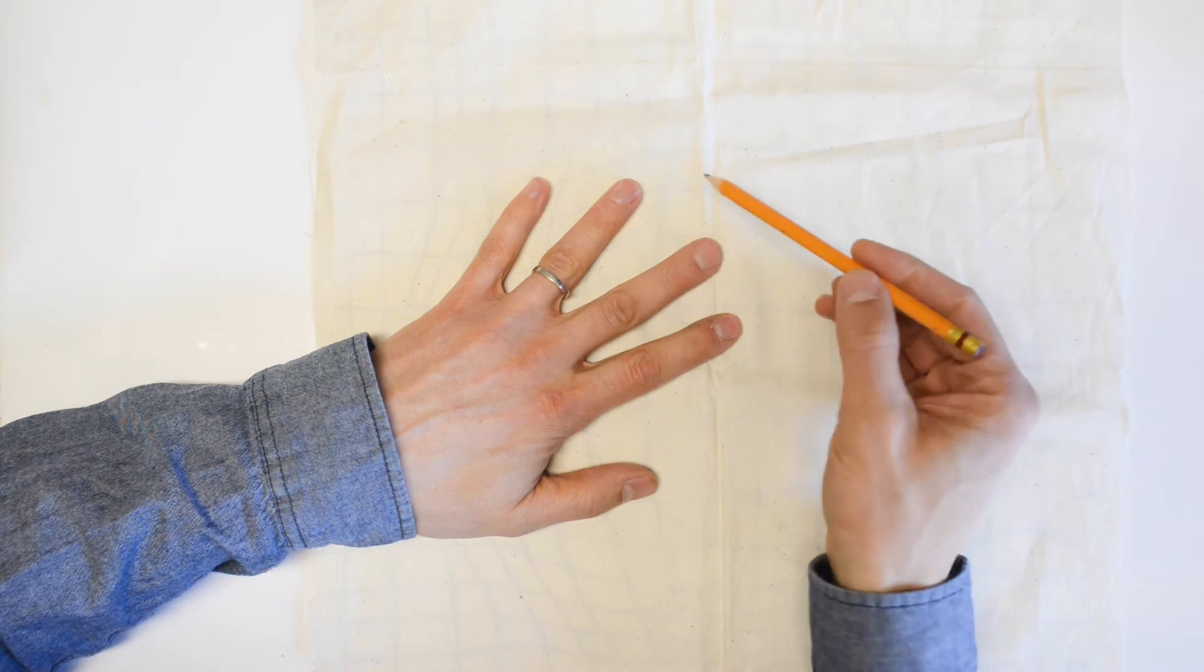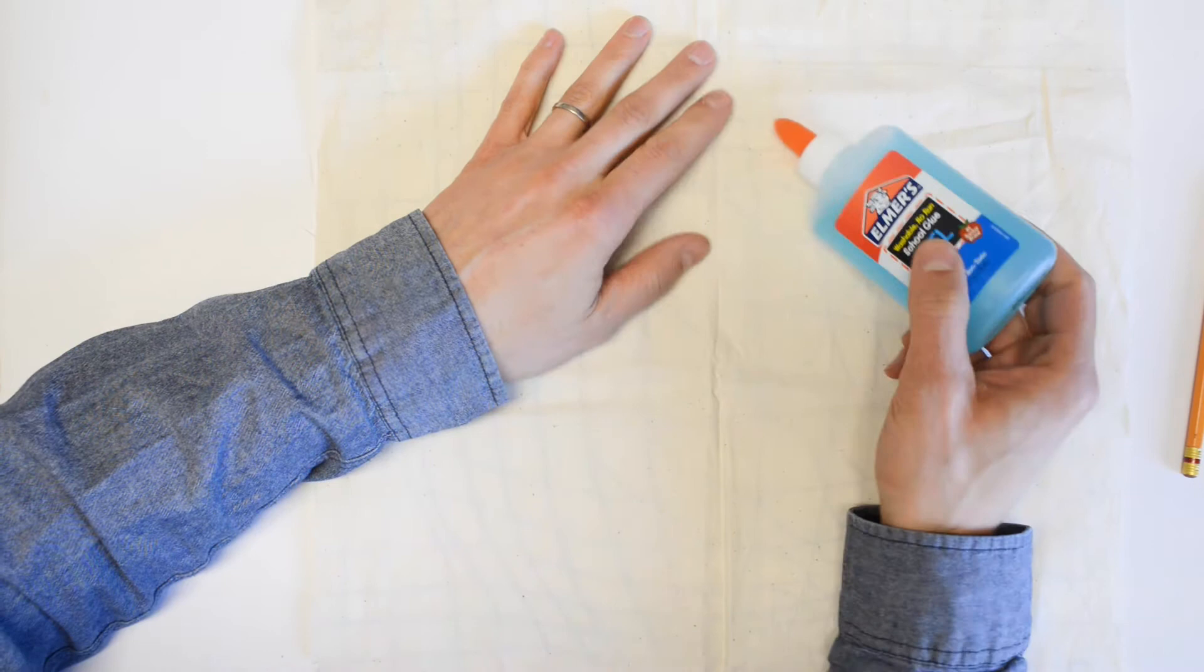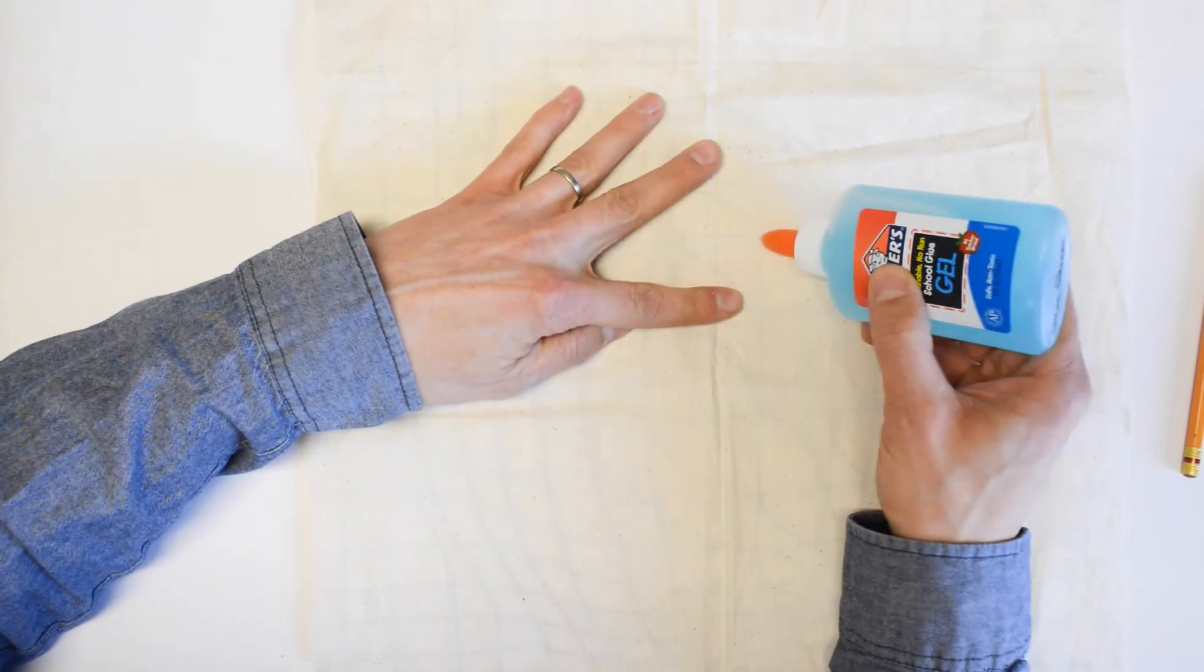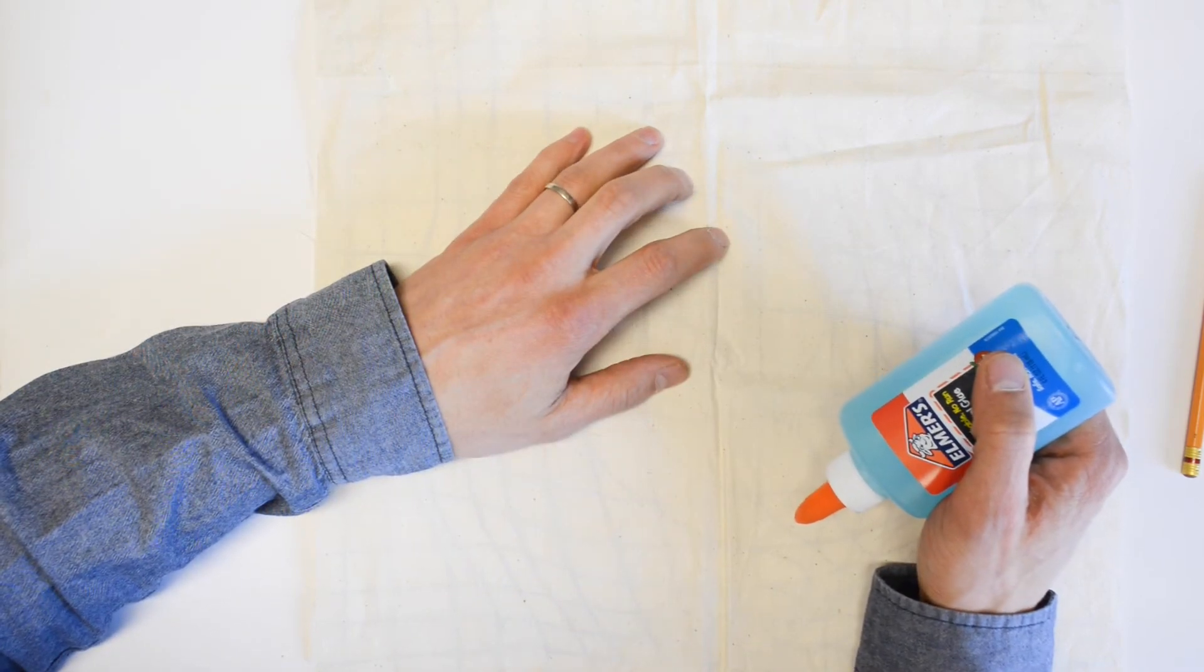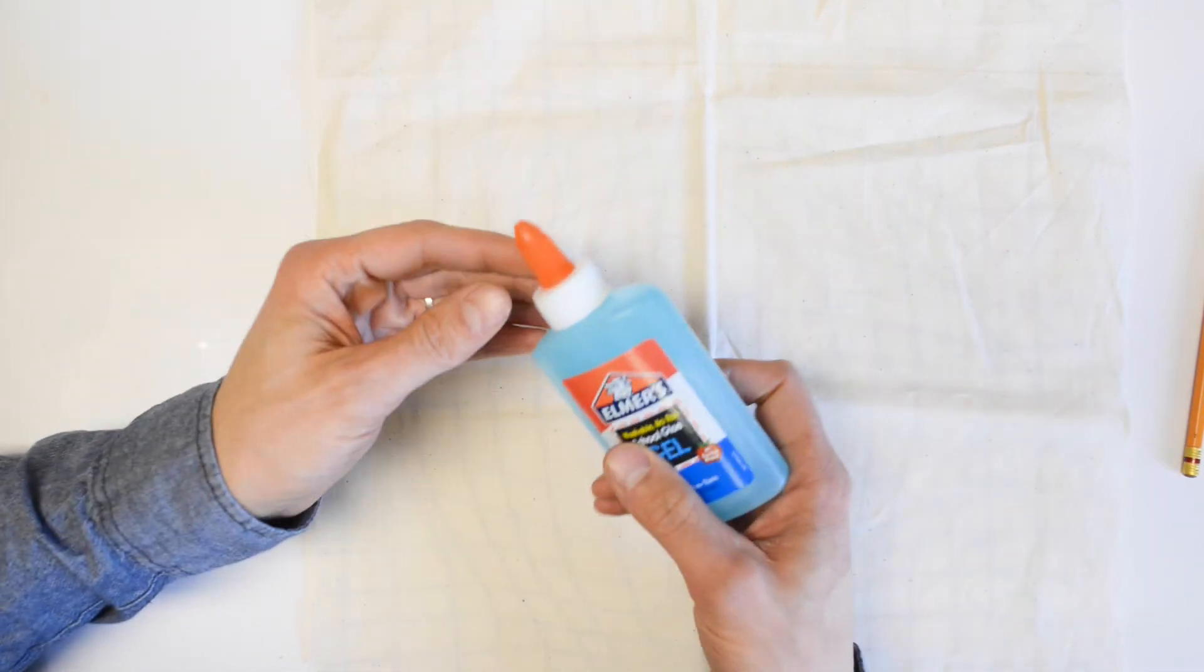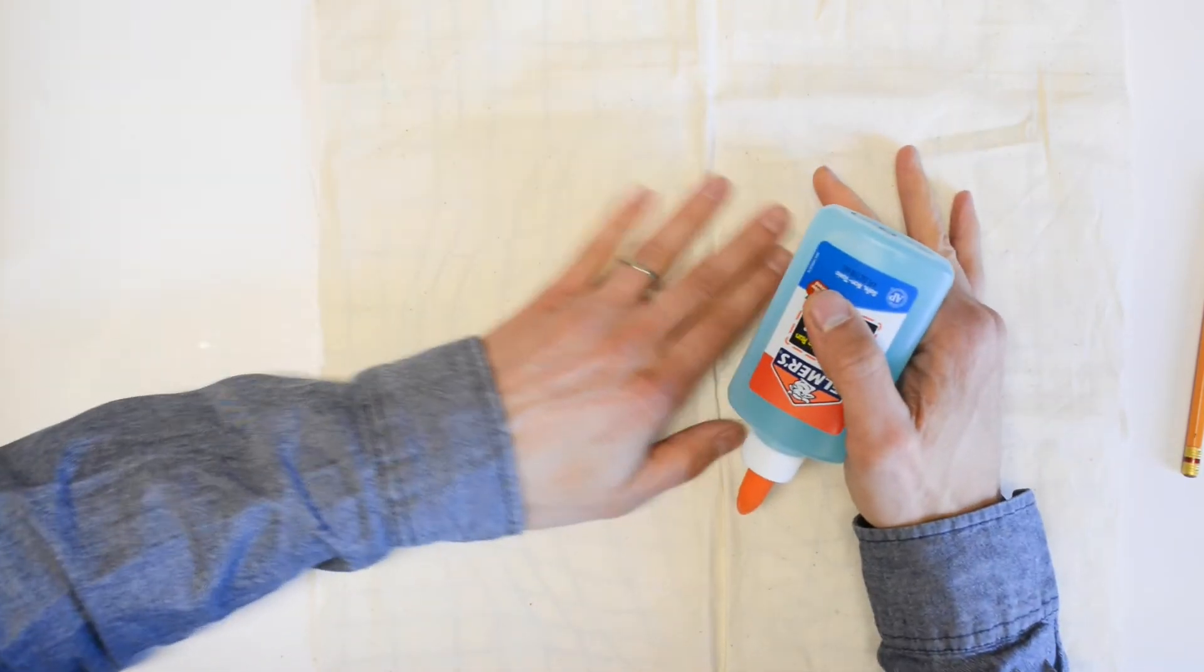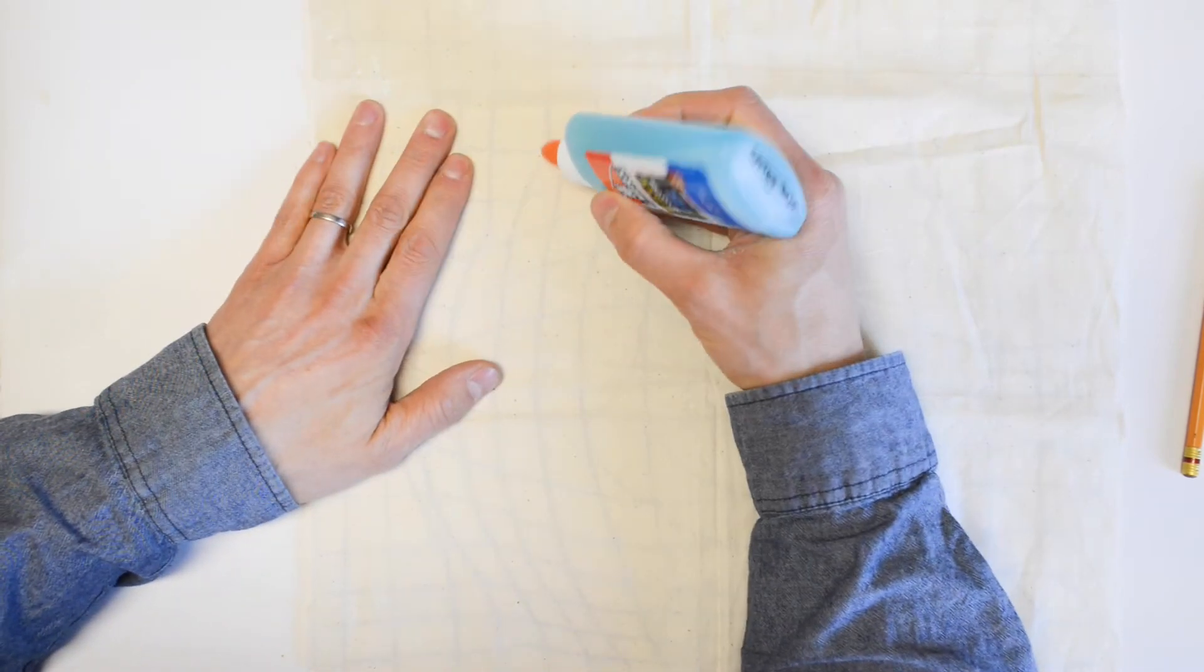Then you could either with your pencil go back and retrace those if you wanted. Or what I'm going to suggest is that I'm actually just going to go right in here with my glue and I'm going to start to glue over these lines and start to glue all those lines in. So basically with my glue, open the nozzle, and I have everything fixed or taped down as tight as I can.